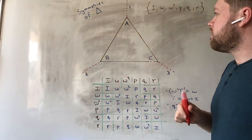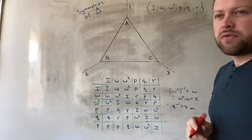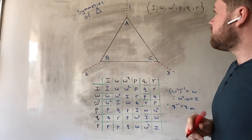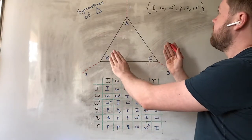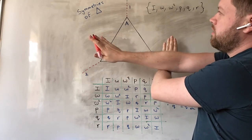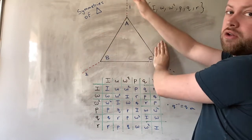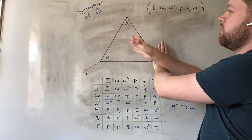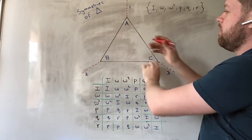There's something else we can do, which is we can flip this triangle around the vertical line of symmetry, for example.